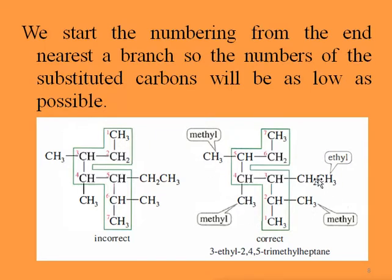So the right-hand side is the best way to name the compound. We have positions 1, 2, 3, and 4: three of them are methyl groups and one is an ethyl group. So we call it 3-ethyl-2,4,5-trimethylheptane. Heptane because we have seven carbon atoms; trimethyl because we have three methyl groups at carbons 2, 4, and 5; and ethyl because we have one ethyl group. Ethyl comes before trimethyl because we arrange substituents alphabetically — E comes before M.